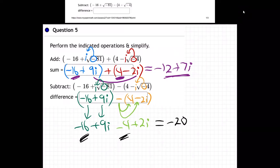Negative 16 minus 4 is negative 20. And then the other two, these two combined, plus 9i plus 2i is plus 11i. And so there's the final answer to that part. So we just added and subtracted two complex numbers. There we go.